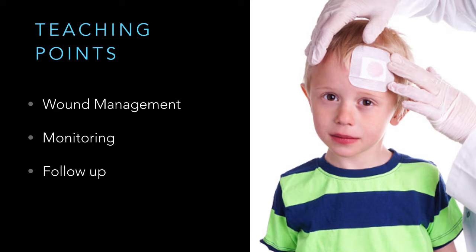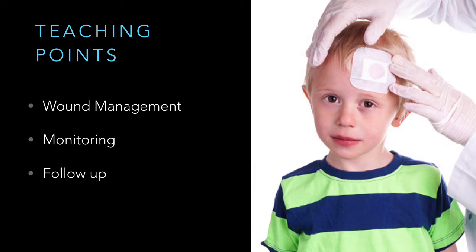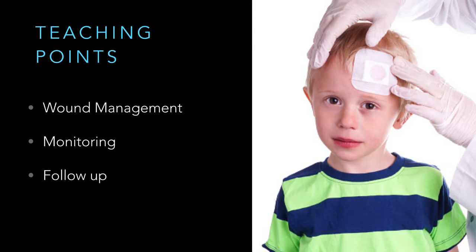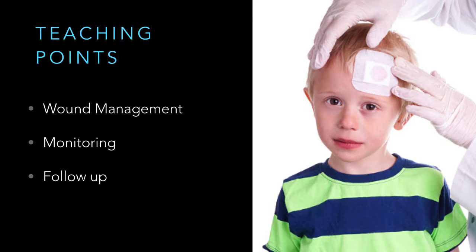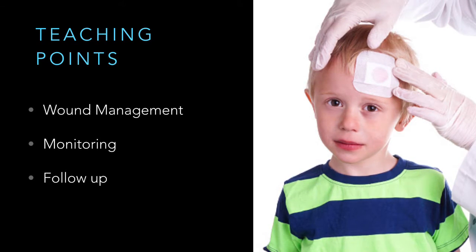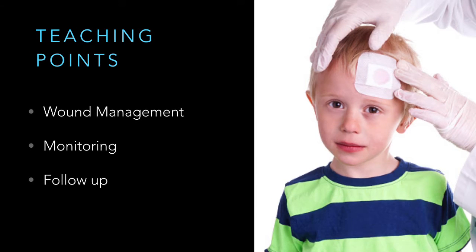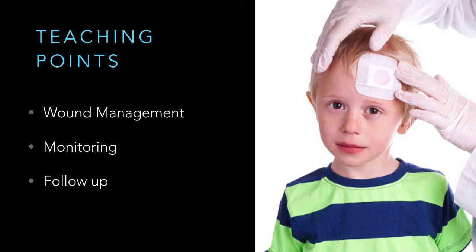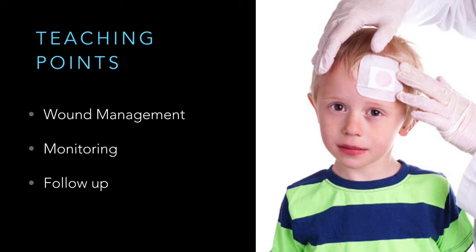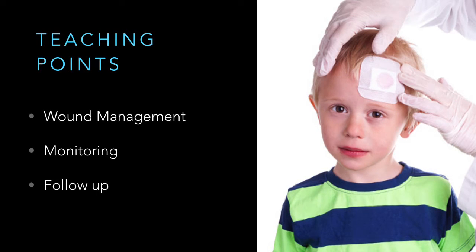Pediatric head injuries within the primary care setting will require a variable degree of teaching based upon the level of insult. However, three priority teaching aspects for minor pediatric head injury events include: the importance of keeping superficial wounds clean and dry; monitoring the child for progressive secondary injuries like alteration of mental status, vomiting, or seizures; and lastly, to follow up with a healthcare provider for either routine wound management to ensure adequate wound healing free from infection, or to follow up for progressive secondary symptomology that may present and demonstrate worsening of the child's condition.